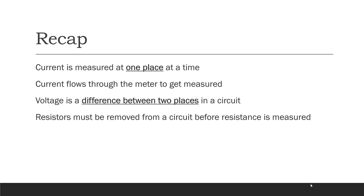So now we know a little bit about measuring voltage, current, and resistance. Current is measured at one place at a time in the circuit, and current has to flow through the meter in order to get measured. Voltage is a difference between two places in a circuit — you can pick any two places and measure the voltage difference between them. And resistors must be removed from a circuit before resistance is measured.